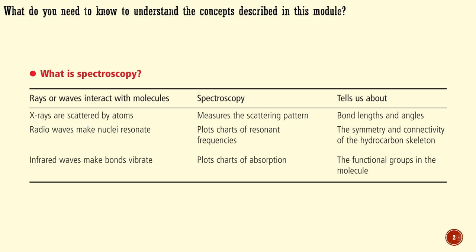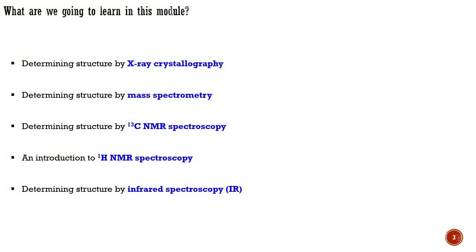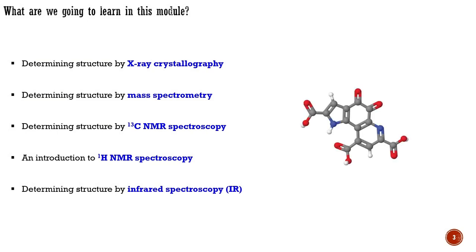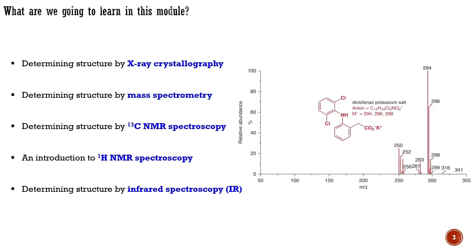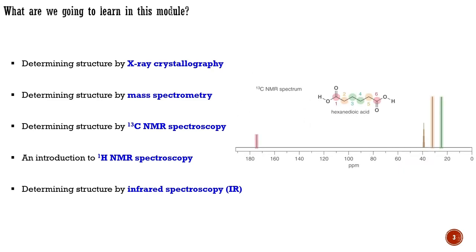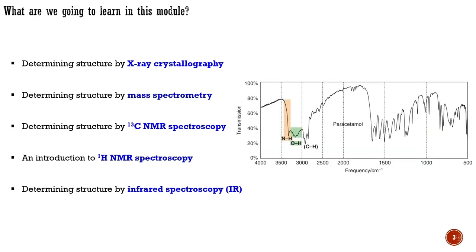I will first consider structure determination as a whole and then introduce four different methods, including X-ray crystallography used to determine bond lengths and angles, mass spectrometry for determining the mass of the molecule and atomic composition, and nuclear magnetic resonance (NMR) spectroscopy, which tells us about symmetry, branching, and connectivity in the molecule. Infrared spectroscopy is also used to identify the functional groups in the molecule.